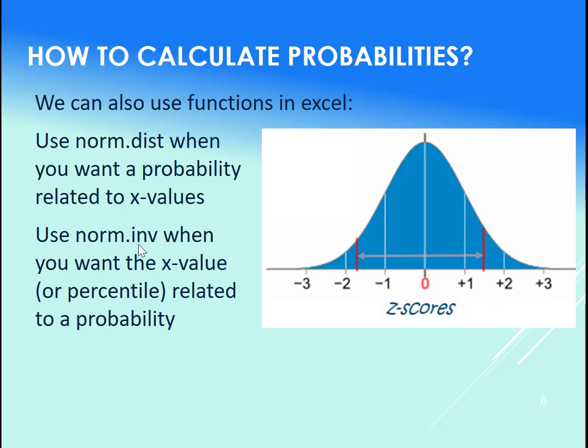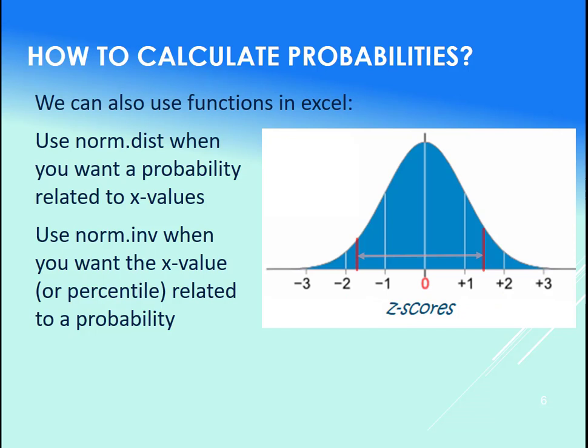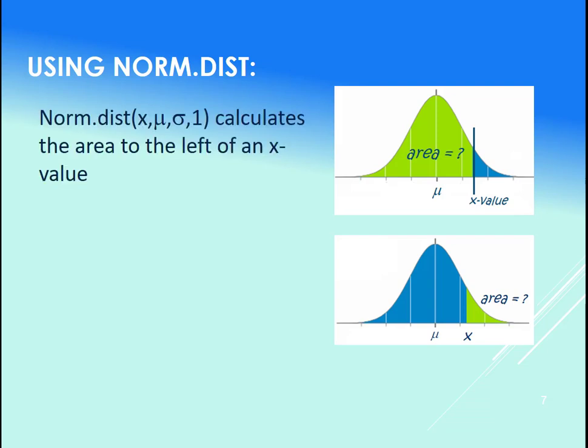Now using the norm.dist first, let's examine that first. We use norm.dist to calculate the area to the left of an x value. So this green area here—norm.dist returns the area to the left.